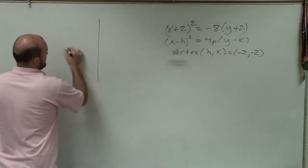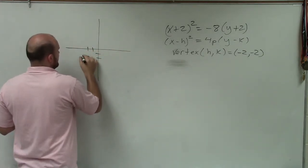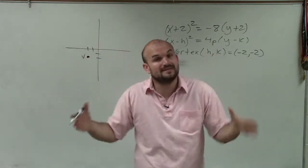So let's go ahead and plot that. So I know that I'm at (-2, -2), OK? There's my vertex. Now, again, the graph either opens up or it opens down.